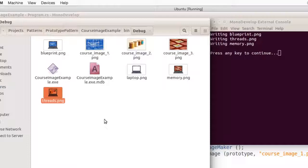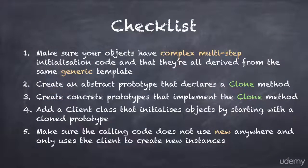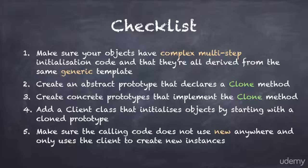Here is a quick checklist you can use to implement the Prototype pattern. First, make sure your objects have complex multi-step initialization code and that they are all derived from the same generic template. Then create an abstract prototype that declares a clone method. Create concrete prototypes that implement the clone method. Then add a client class that initializes objects by starting with a cloned prototype. And finally, make sure the calling code does not use new anywhere and only uses the client to create new instances.